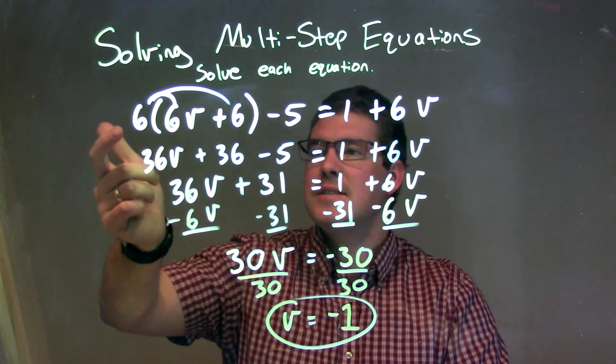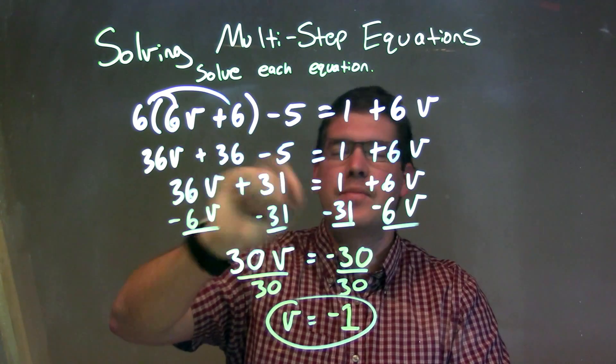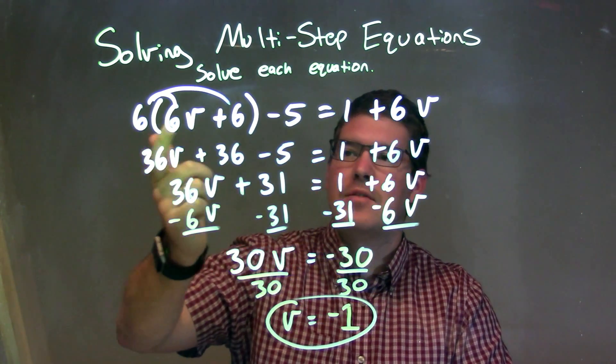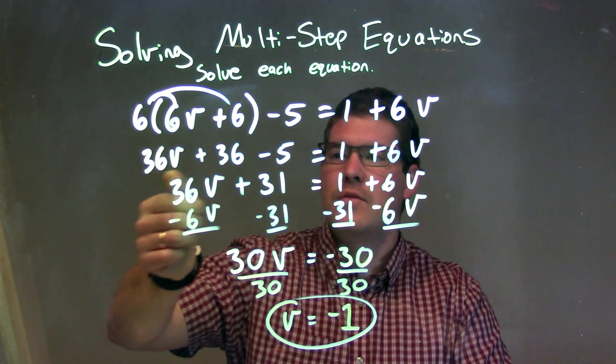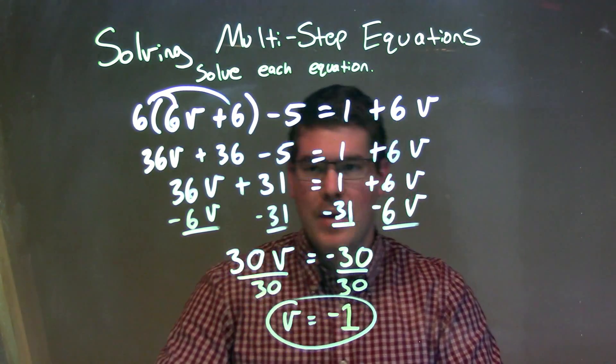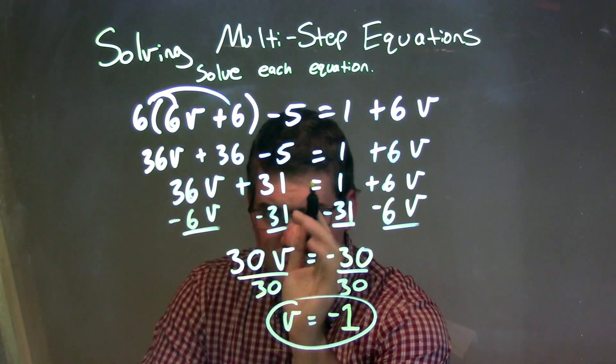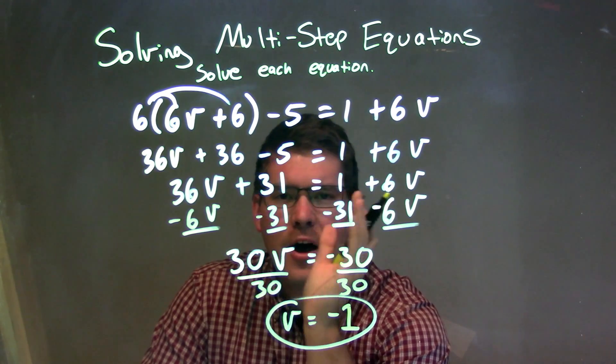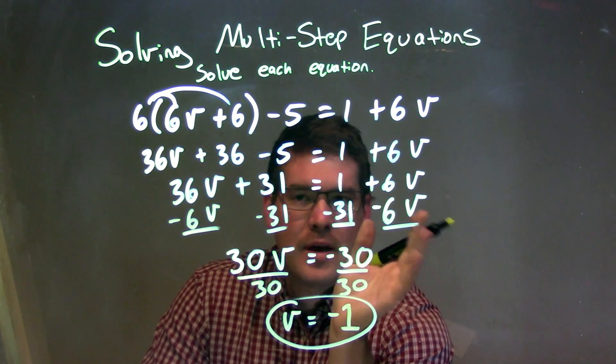So, let's recap. We're given 6 times parentheses, 6V plus 6, minus 5 equals 1 plus 6V. I distributed the 6 across to both parts, giving me 36V plus 36. I then combined the 36 and minus 5 to become a positive 31. At this point, I had no like terms that I could find on each side of the parentheses, keeping it there.